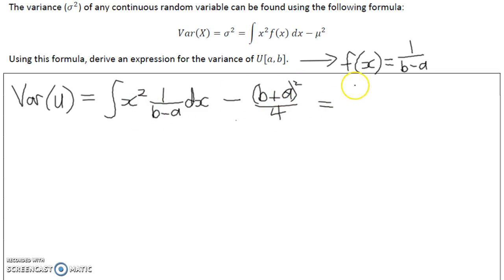Now this first integral, let's bring the constant out the front, so 1 over b minus a out the front. I forgot to mention the limits, they're going to be as they were when we were finding the mean, we're going to integrate over the whole interval from a to b.